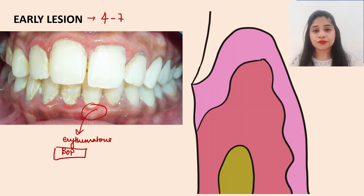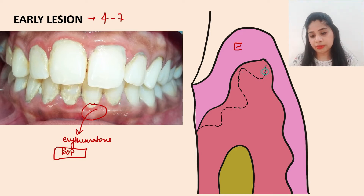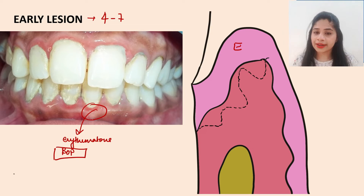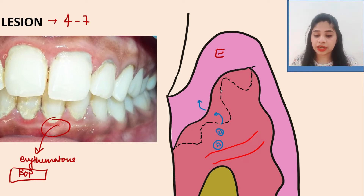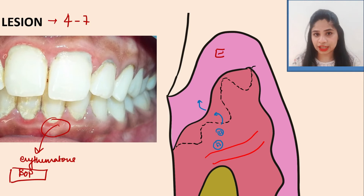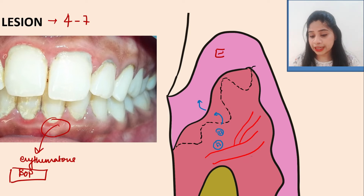Histopathologically in Stage 2, rete ridges form between the connective tissue and the epithelium, increasing the surface area. This is important for neutrophil migration — neutrophils move from blood vessels through the chemotactic gradient, and because of the increased surface area, they migrate into the epithelium. The process of phagocytosis of microorganisms begins at this stage.